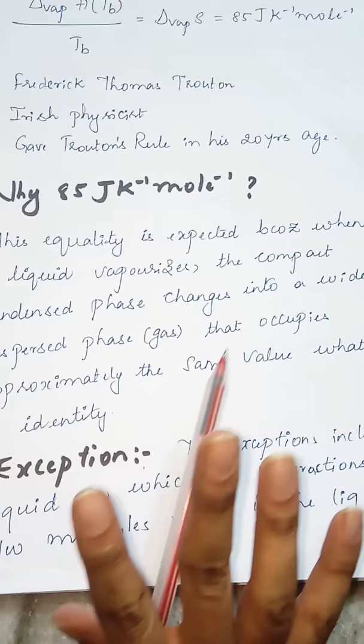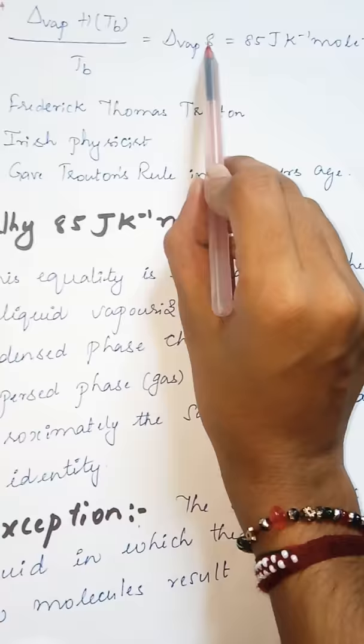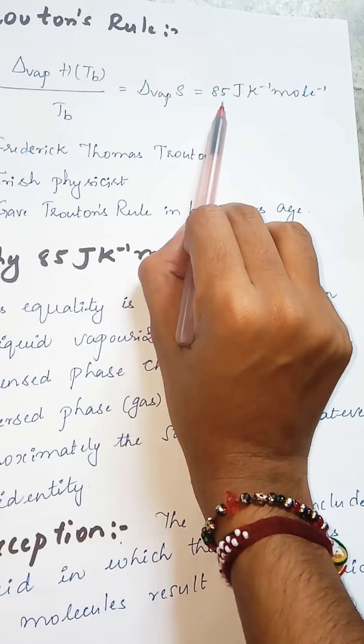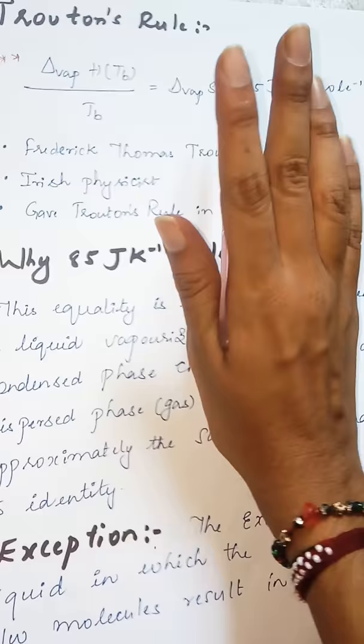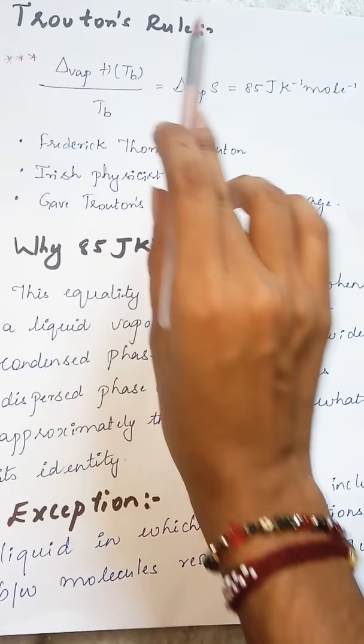Because of the little ordered arrangement of that hydrogen bonding, this value is found to be a little greater than 85. For water, I think it is approximately 95 Joule K inverse mole inverse. So whenever there are some molecular interactions or hydrogen bonding or other forces present, this rule is not applicable. This is the exception for Trouton's Rule.